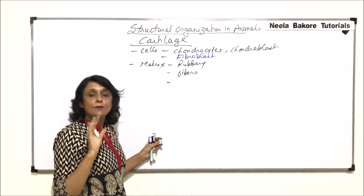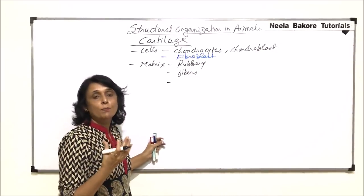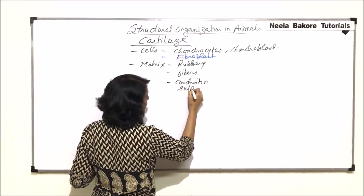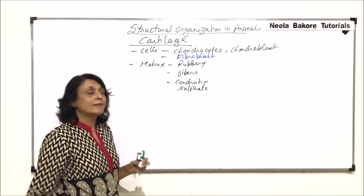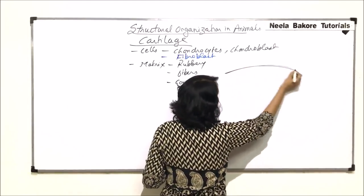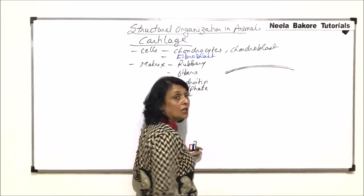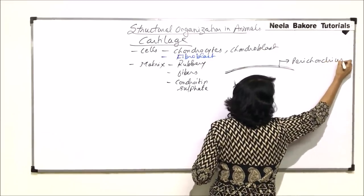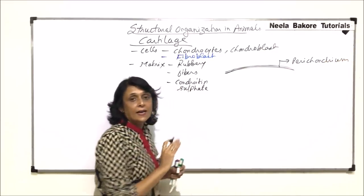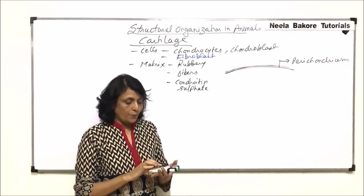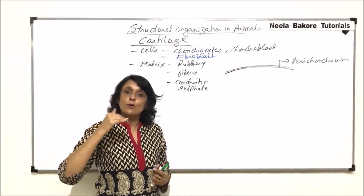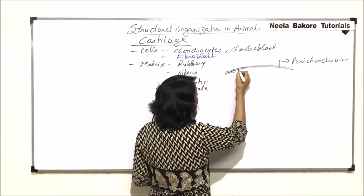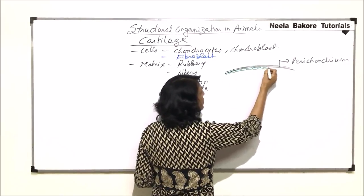Let us take the structure. The outer part is covered with a fibrous sheath which is known as perichondrium. There is nothing inside as was there in case of the compact bone. In compact bone there was an outer layer and an inner layer. Here there is only one layer, that is the outer layer, and beneath this layer are these chondroblasts.